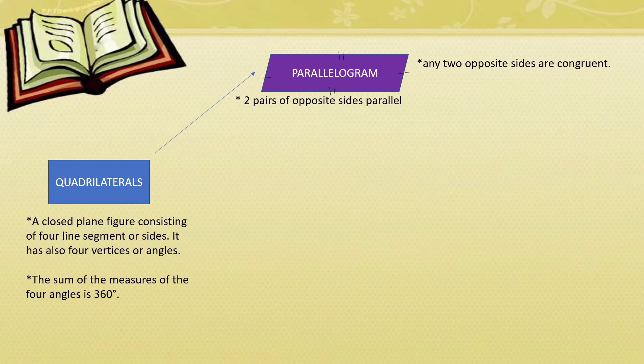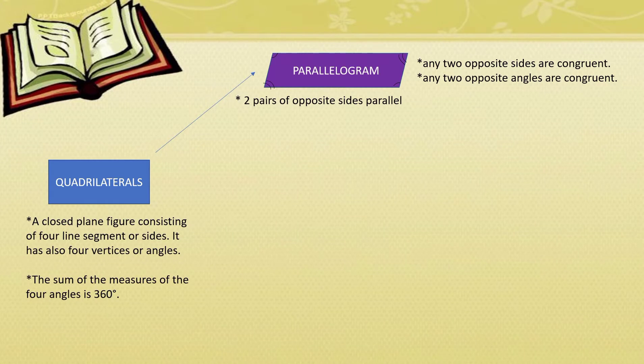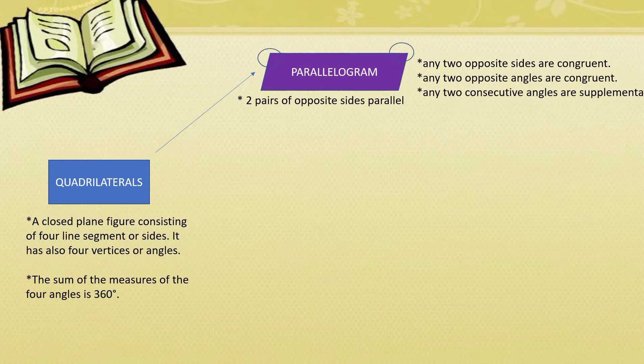Second, any two opposite angles are congruent. Third, any two consecutive angles are supplementary. When we say supplementary, if we are going to add the measures of the two consecutive angles, their sum is 180 degrees.